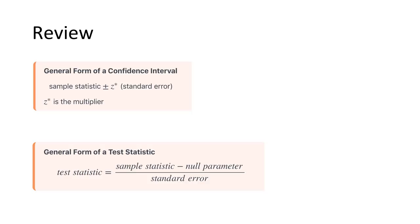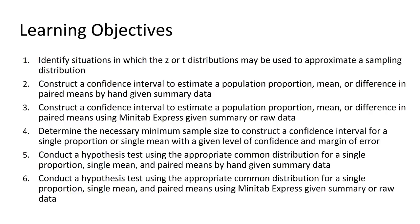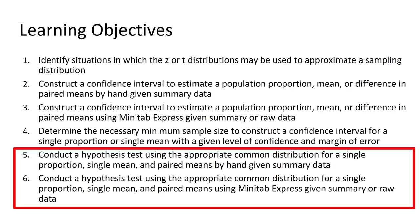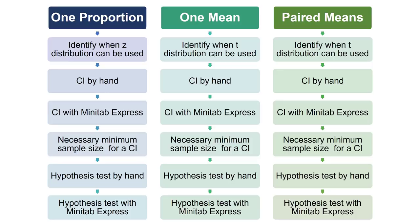Let's review the learning objectives. This will be a longer video because we will see a lot of slightly different examples, both by hand and using Minitab Express. The general formulas will be applied for all three parameters we'll see this week: one proportion, one mean, and paired means. I know it looks like a lot, but most of this is built on what you've already learned in Lesson 7, and a lot of these learning objectives are very similar. For example, objectives 2 and 3 are the same — it's just that in 2, we're doing it by hand, and in 3, we're using Minitab Express. Objectives 5 and 6 are also the same, except 5 uses hand calculations and 6 uses Minitab Express.